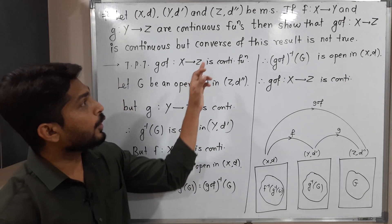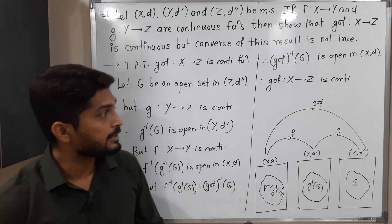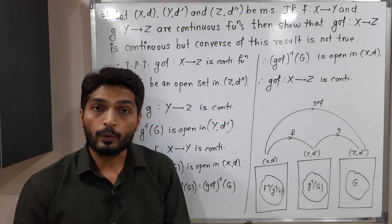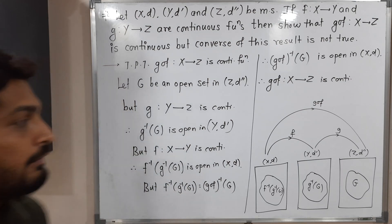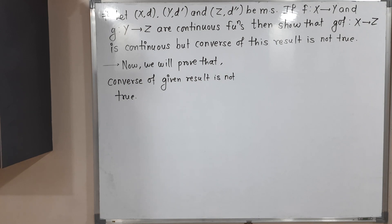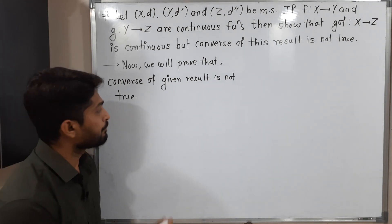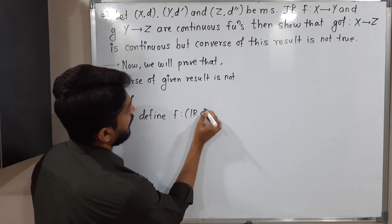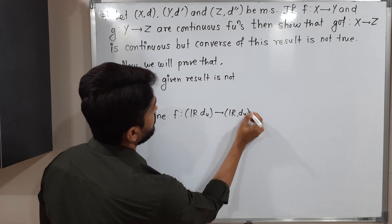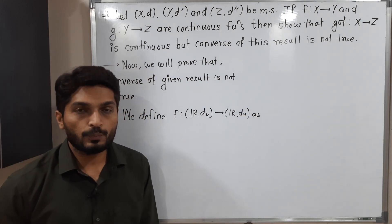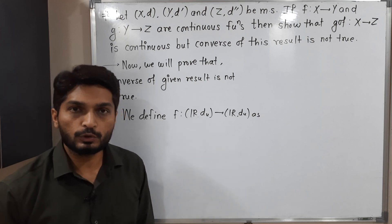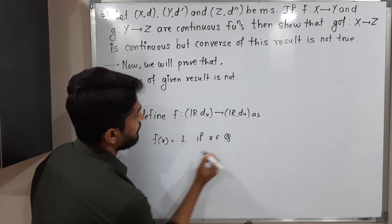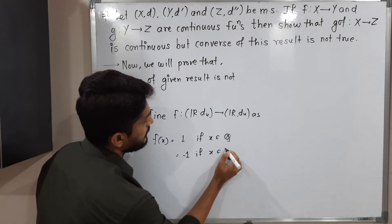After that we have to prove the converse of this result is not true. That means if G composite F is a continuous function, we cannot say anything about the continuity of F and G individually. We are going to prove that by giving one example. We define a function F from R with usual distance to R with usual distance, where F of x equals 1 if x is a rational number, and equals minus 1 if x is an irrational number.